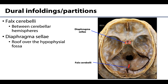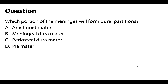That covers the cranial meninges and dural partitions. For review: which portion of the meninges will form the dural partitions? Is it A, the arachnoid mater; B, the meningeal dura mater; C, periosteal dura mater; or D, pia mater? The correct answer is B, the meningeal dura mater. It is the meningeal dura mater that reflects away from its close adherence to the periosteal dura mater to form the dural infoldings or partitions. The periosteal dura mater is the part very closely adhered to the bone, so it is the deeper meningeal dura mater that will reflect away. The arachnoid and the pia mater are not involved in the dural partitions, so those two are not the correct answer.